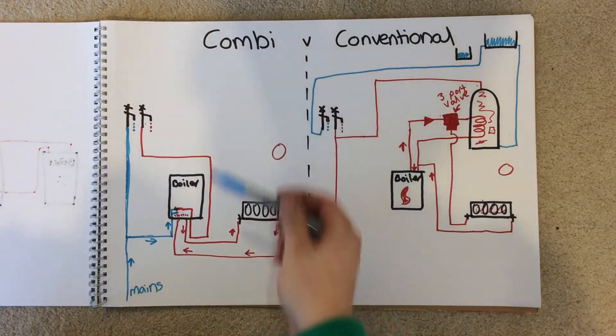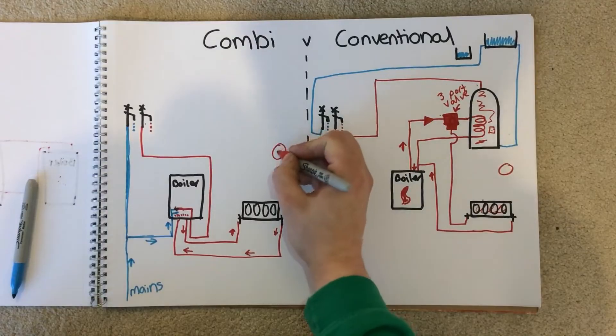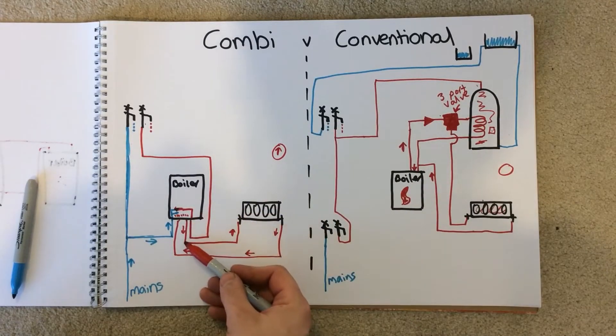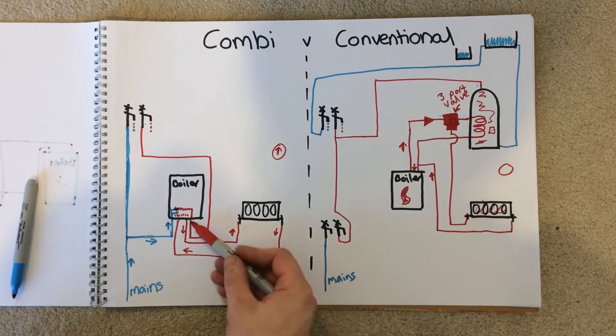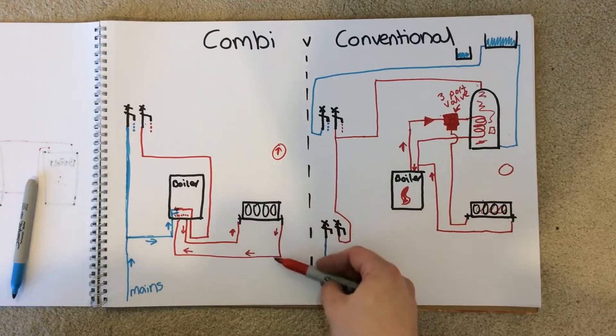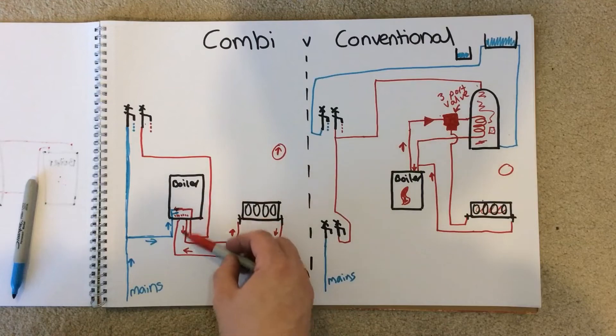For a combination boiler, you turn your thermostat on when you want heat. The boiler then tells itself I need to produce some heat, comes from the boiler through the radiator, back out the radiator, and back to the boiler. Very straightforward - you ask for it, it comes on, goes through, back out, and back.